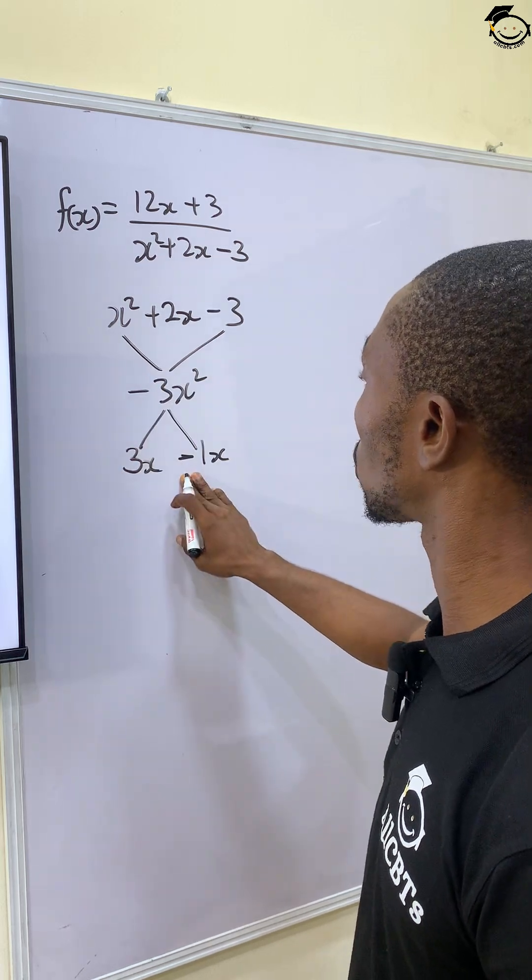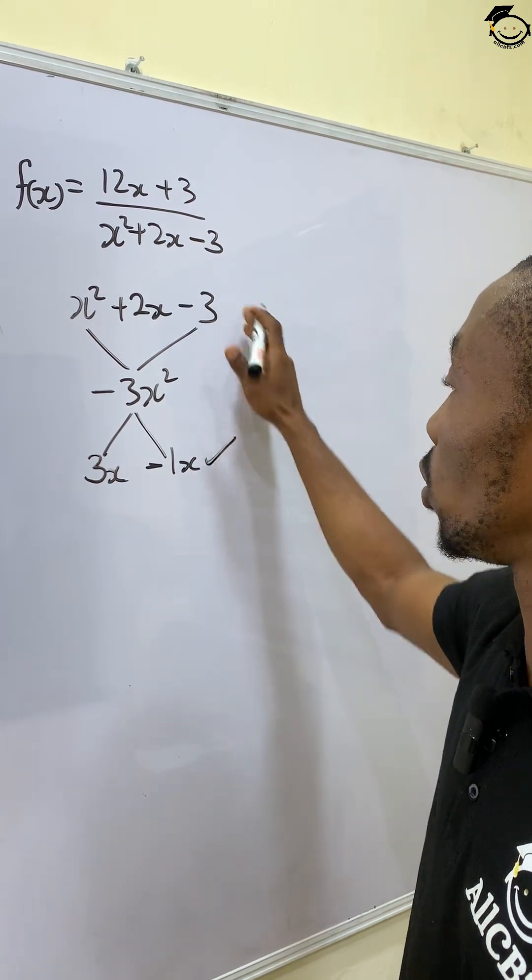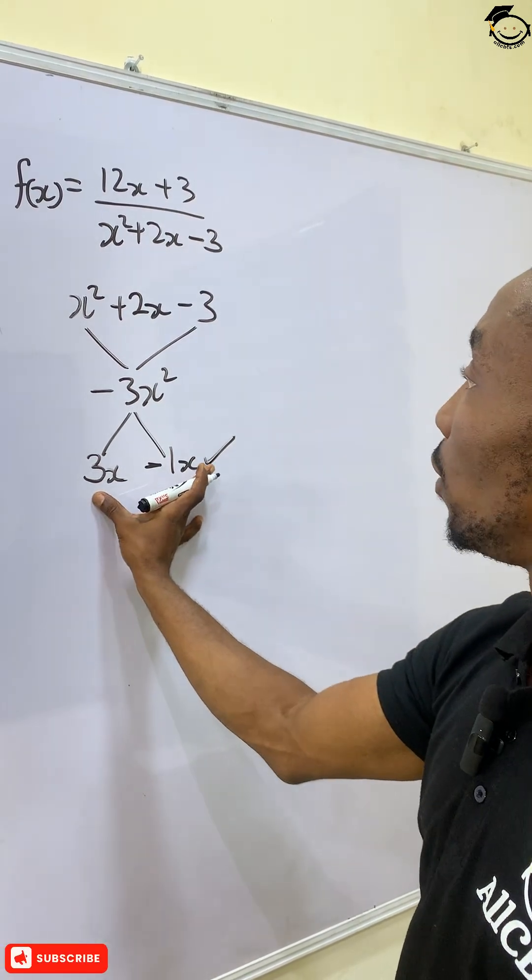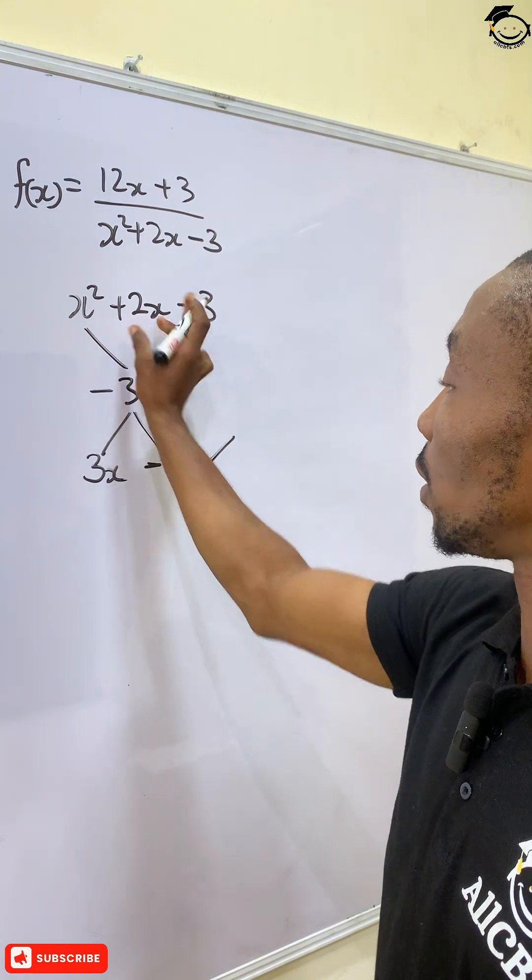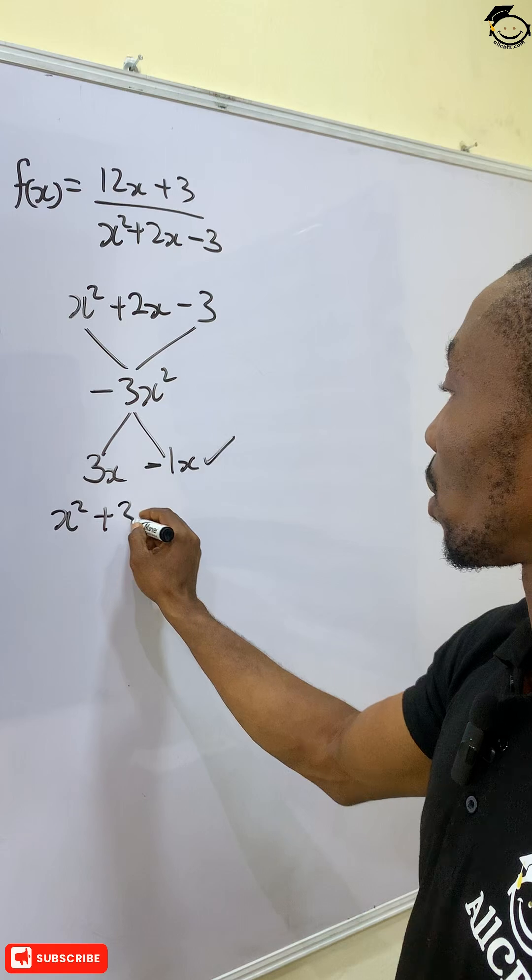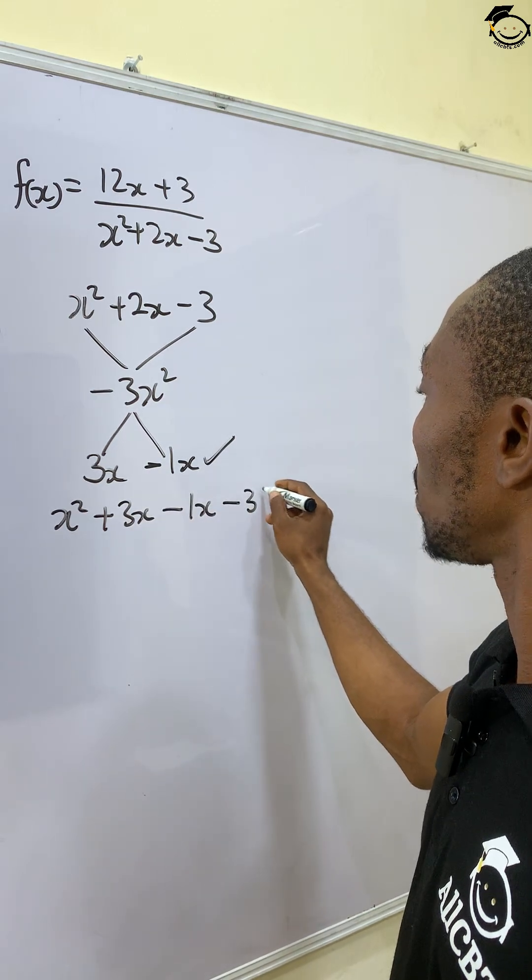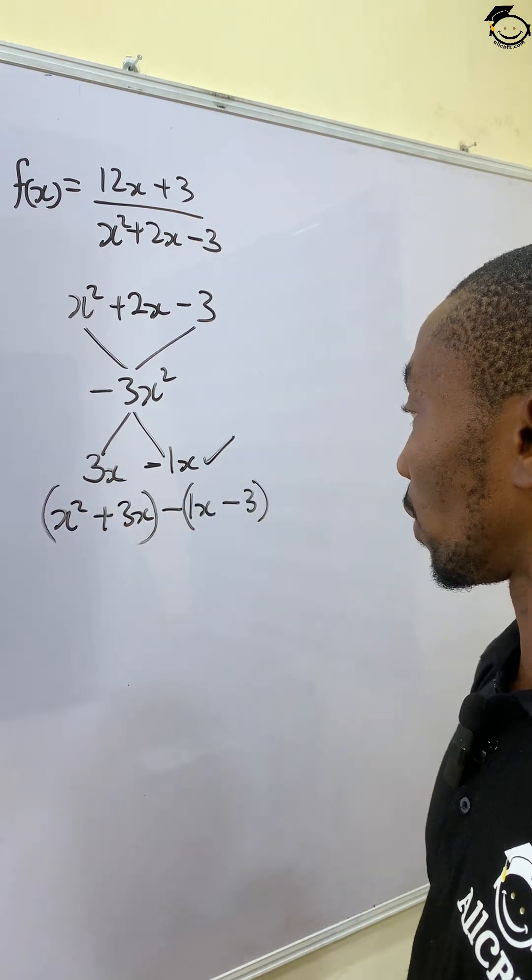Now substituting these values for positive 2x, we would have it as x squared plus 3x minus 1x minus 3. Okay, now grouping these two together.